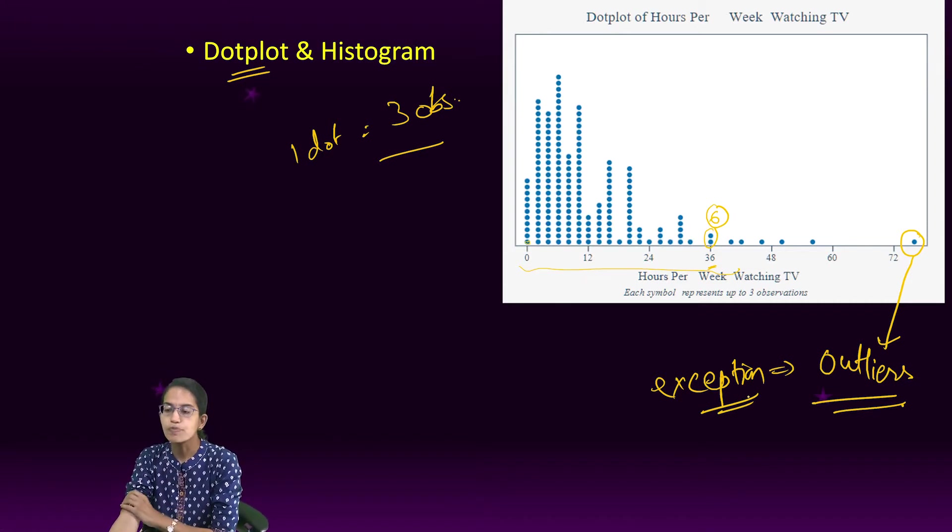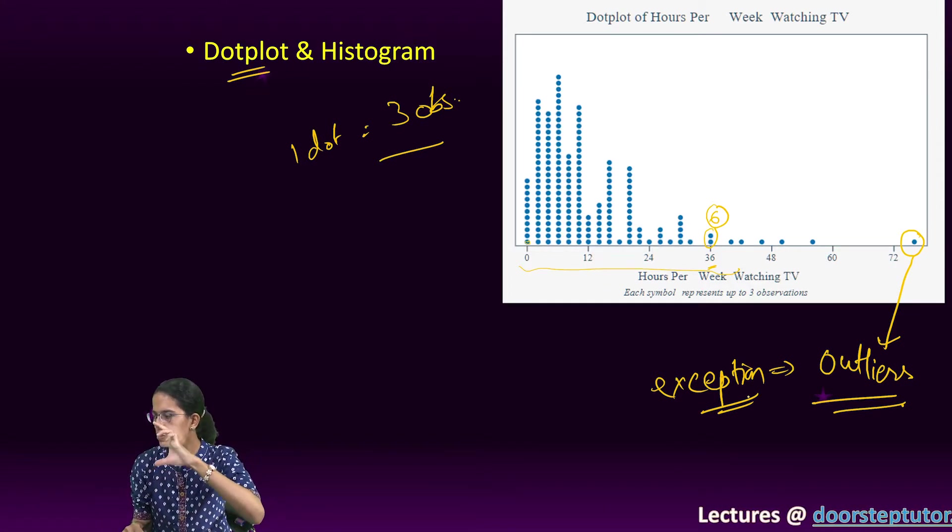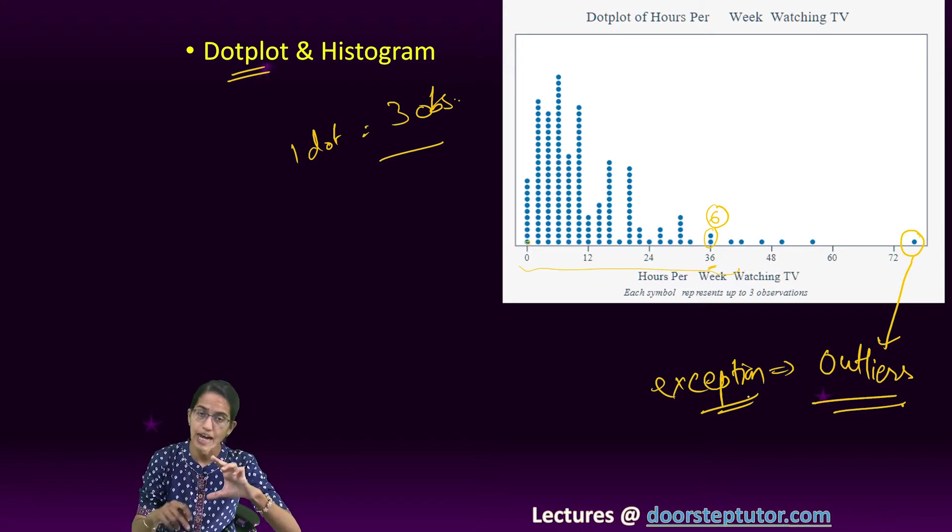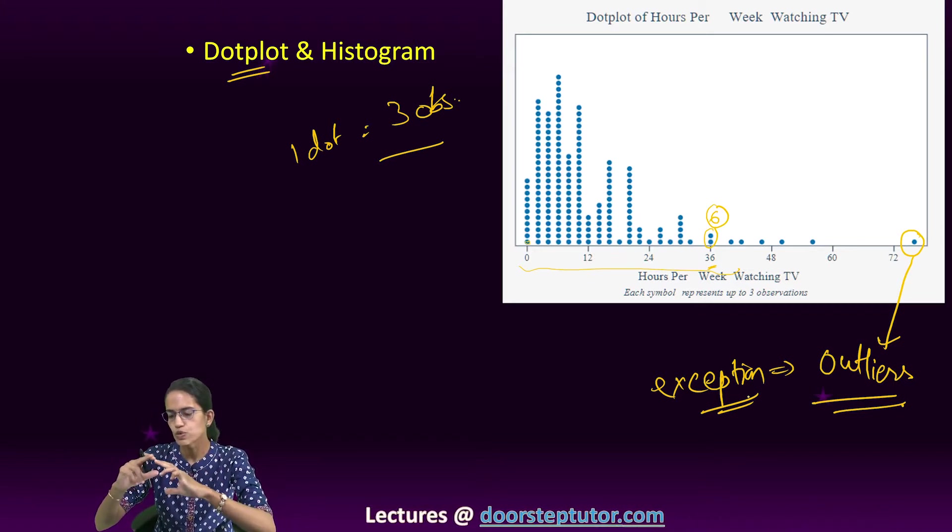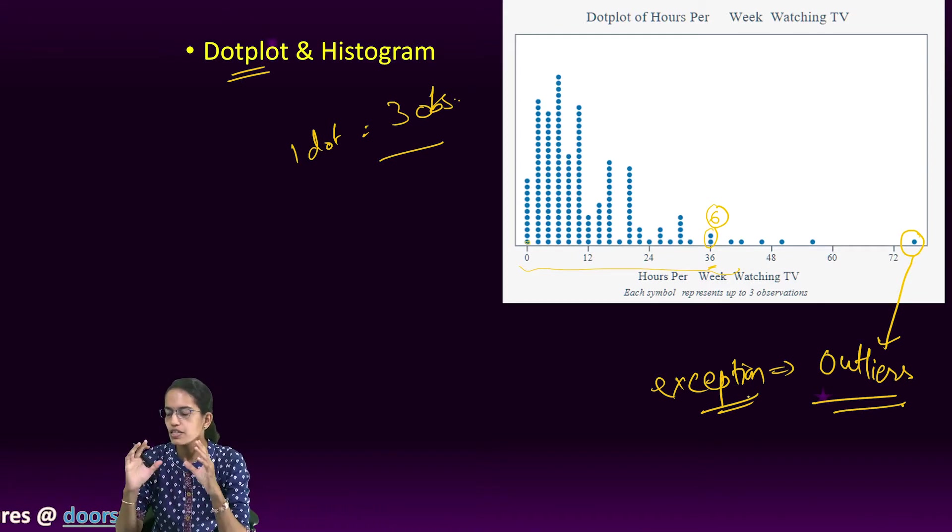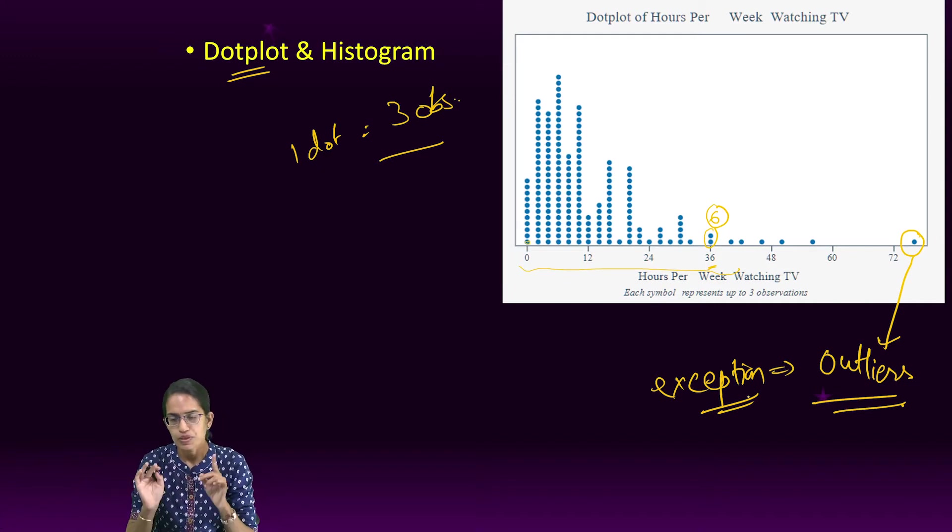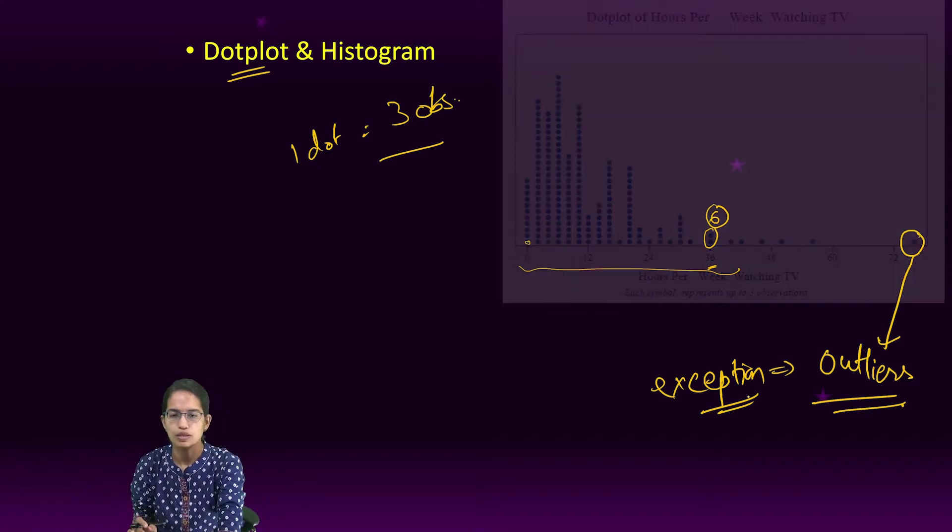Dotplots help us in statistical representation and inference. We can have values which are greater than those points, less than those points, or between those points. This can be understood by counting the number of dots.